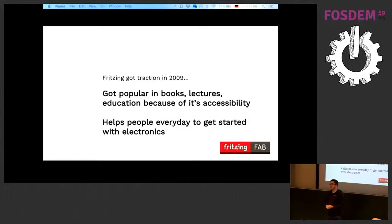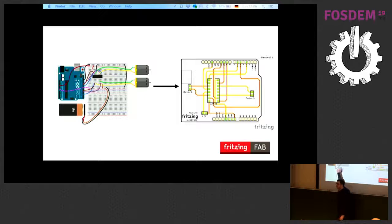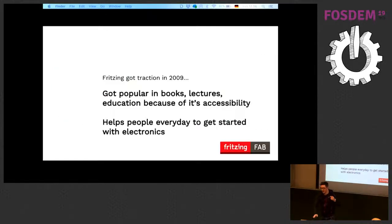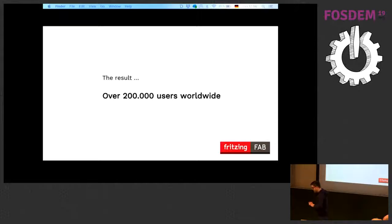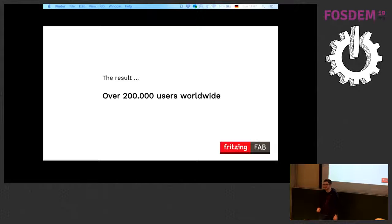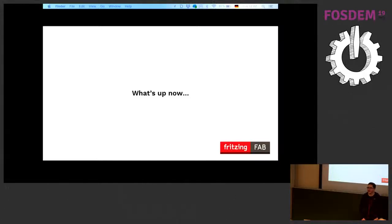Fritzing is widely used. One reason is that whenever you open a book from O'Reilly about electronics, the sketches are mostly made with Fritzing, because people like the visual breadboard view — they can imagine building it themselves. That's why it's so popular in books, lectures, and education, even with pupils. The result is that right now Fritzing is used by 200,000 people. There is some tracking within Fritzing, so we know this is true.